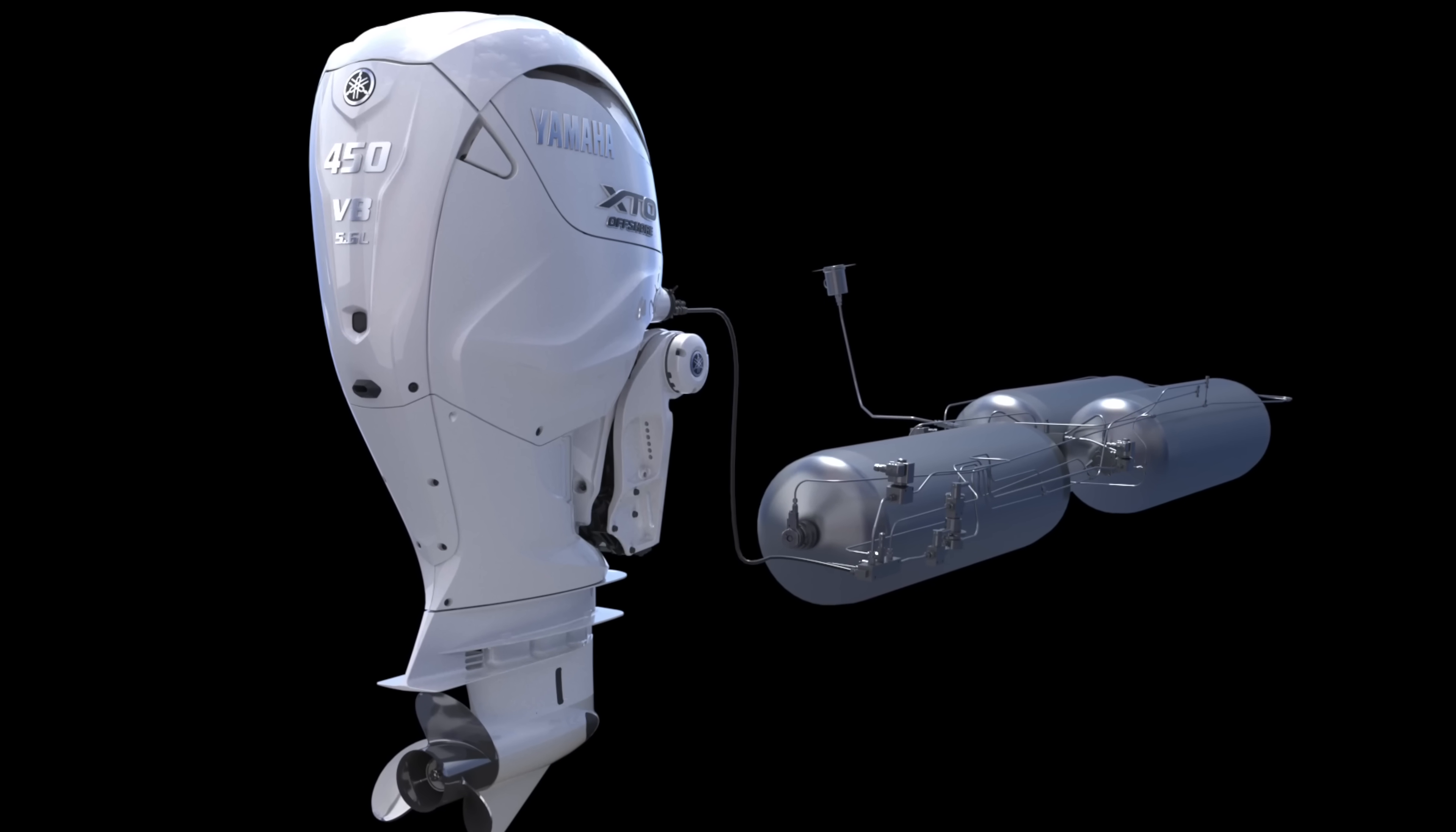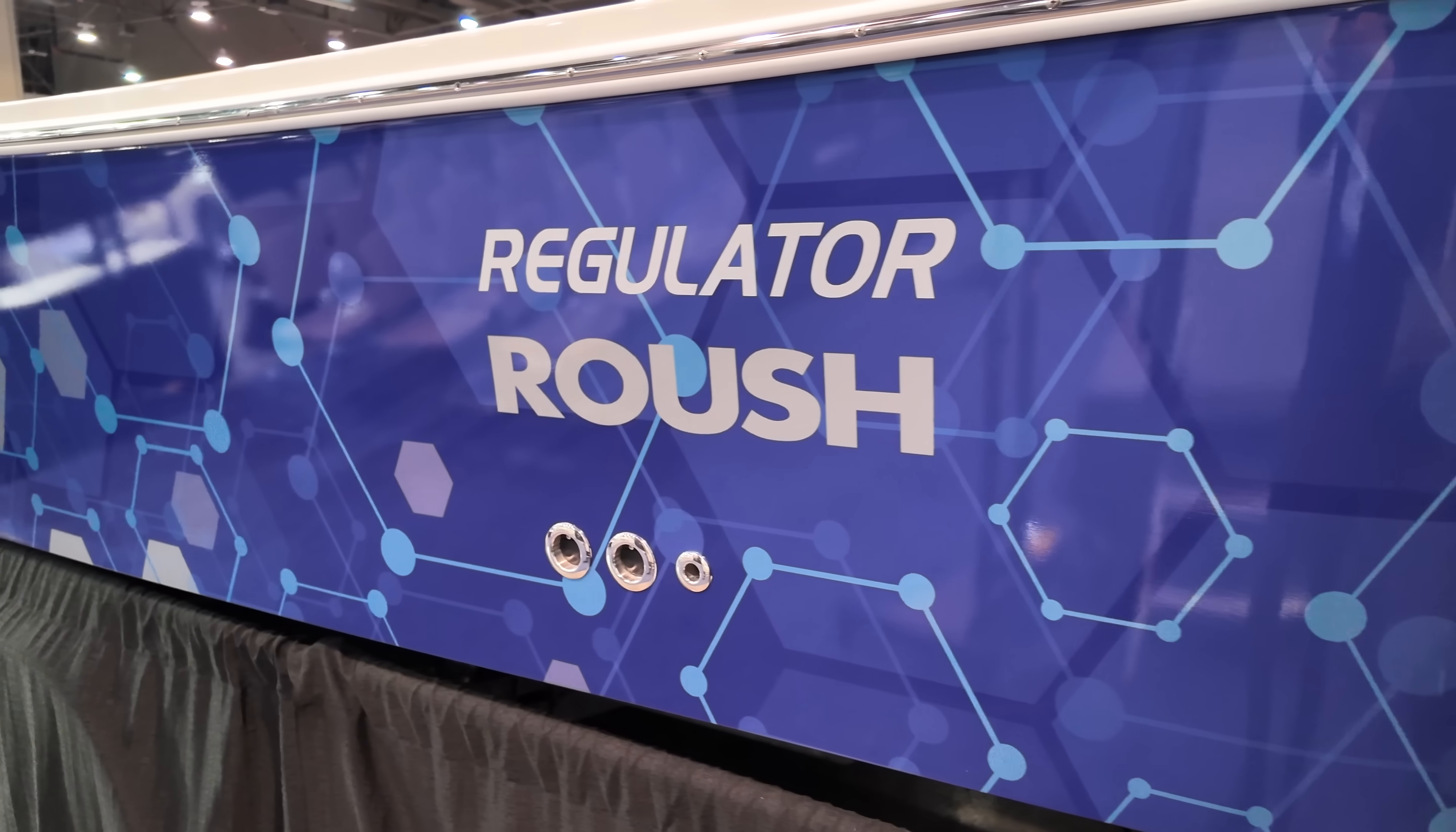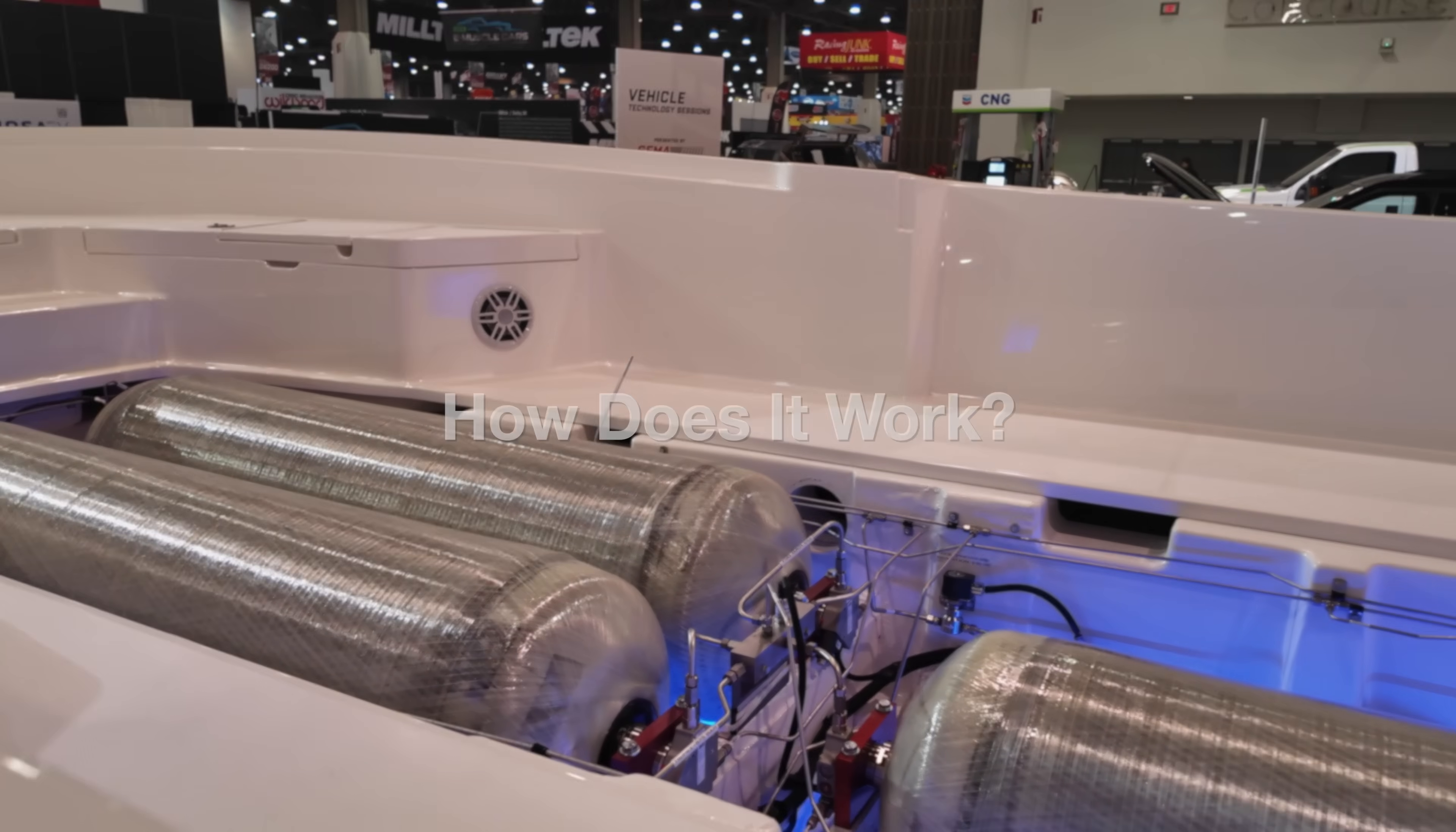Alright, so let's move on to the actual prototype build. In this case, Yamaha is the brains behind the combustion engine. Roush has engineered the fuel system and Regulator has provided and adapted their 26-foot offshore hull to accommodate the hydrogen fuel tanks. So how does it all work?